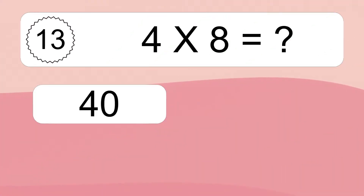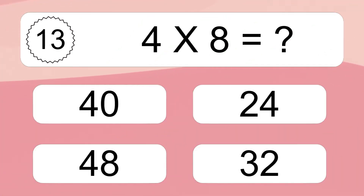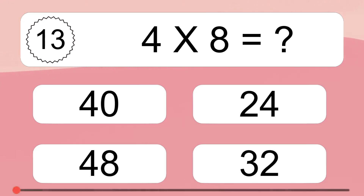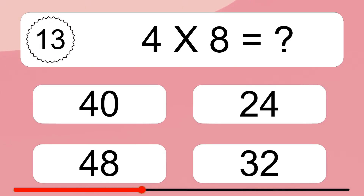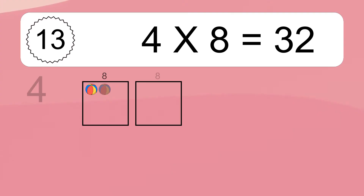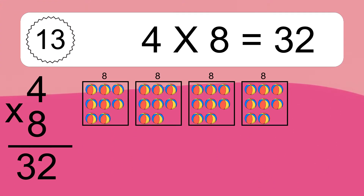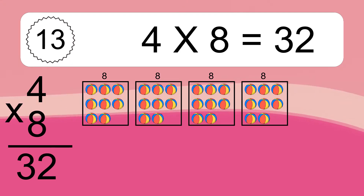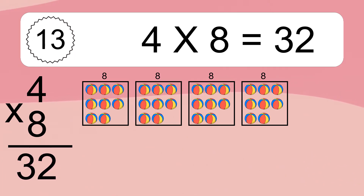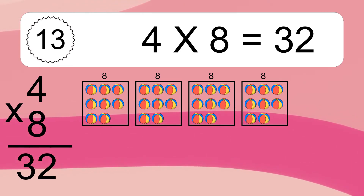4 times 8 equals what? 4 times 8 equals 32. We have 4 boxes, and each box has 8 colorful balls inside. If you count all the balls in all the boxes together, you will have 4 times 8 balls. This equals 32 balls.